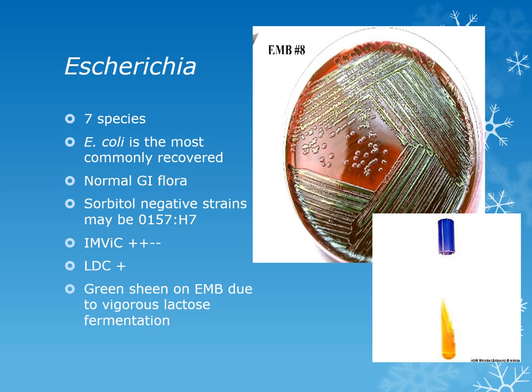IMVIC is an acronym that stands for Indole, Methyl Red, Voges-Proskauer, and Citrate. IMVIC tests used to be used for environmental organisms. For Escherichia, it is positive for Indole, positive for Methyl Red, negative for Voges-Proskauer, and negative for Citrate. That pattern applies to all of the organisms in the Escherichia group.